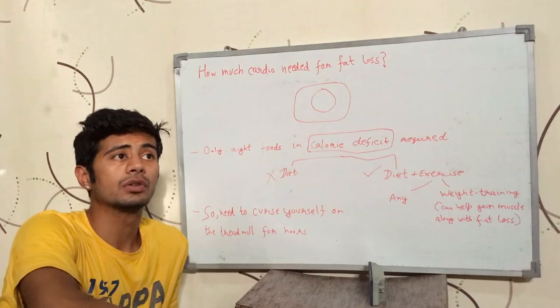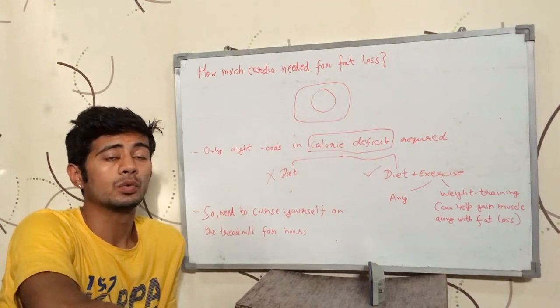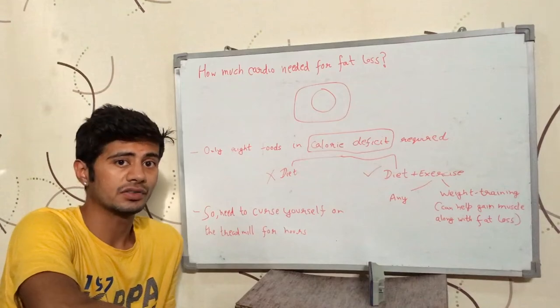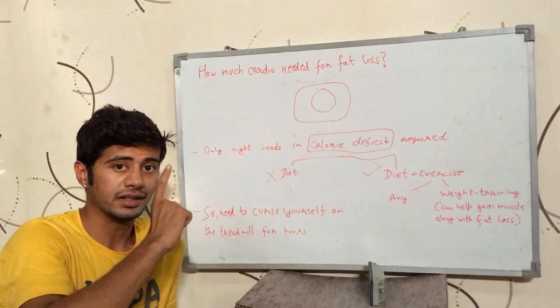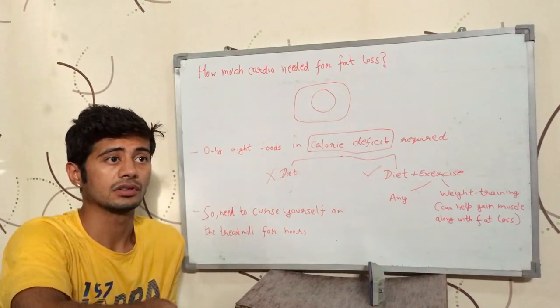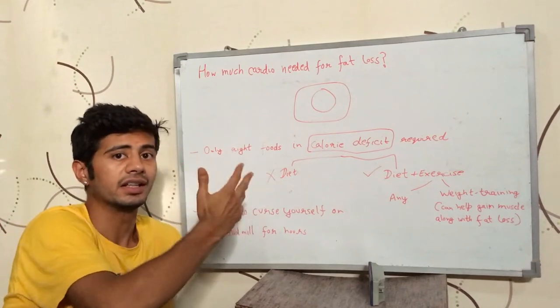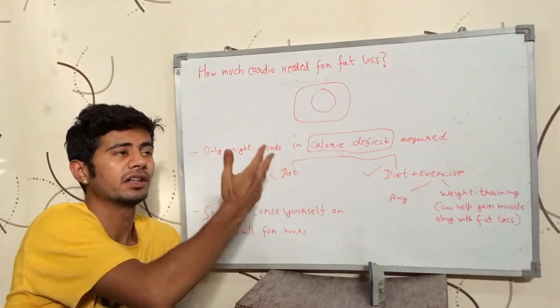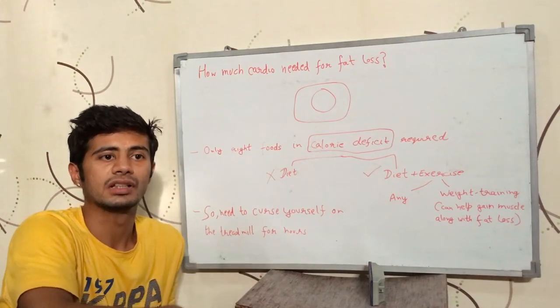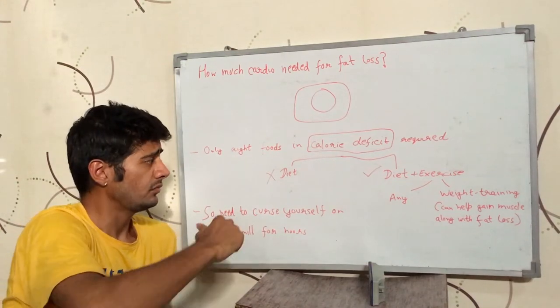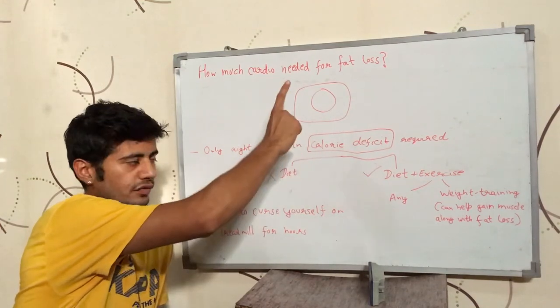See, in calorie deficit, you will lose weight but you can also lose muscle instead of fat. So, to save your muscle and lose just fat, you should be eating the right foods. So, you should be in a calorie deficit and eat the right foods for fat loss. Otherwise, you can be eating nothing and be in a calorie deficit. Eating nothing makes you go in the calorie deficit but you will lose muscle if you do not eat anything for a significant period of time.